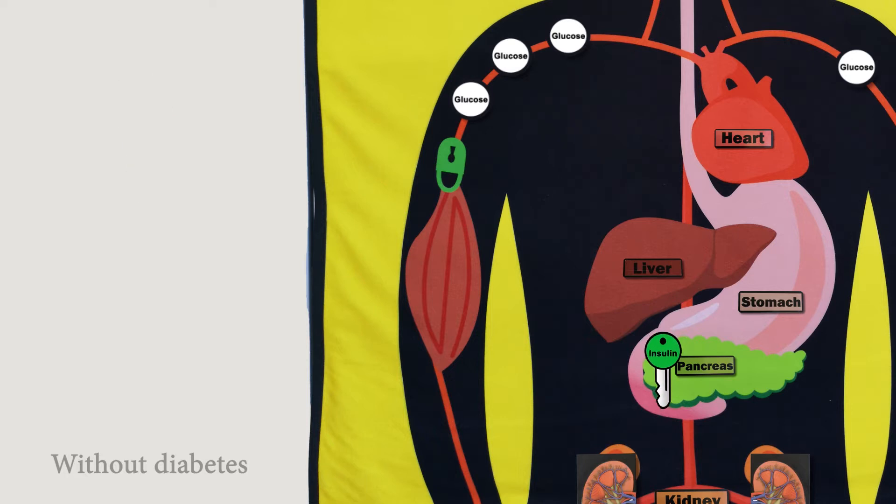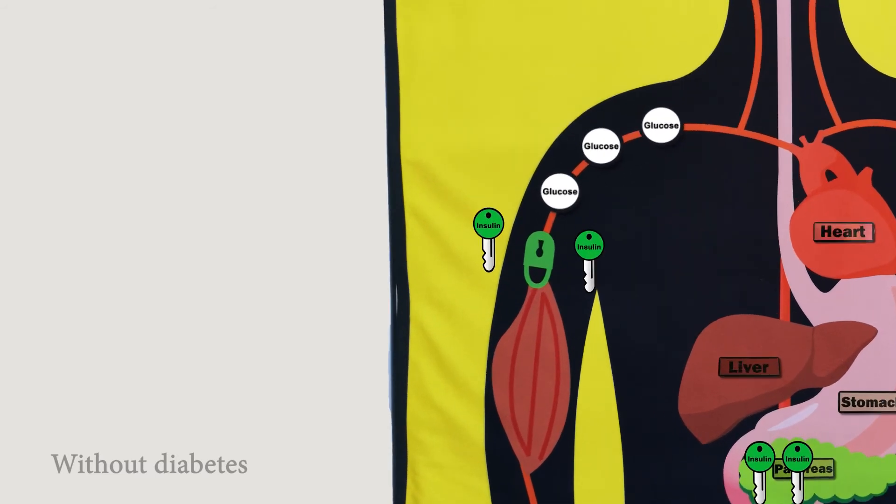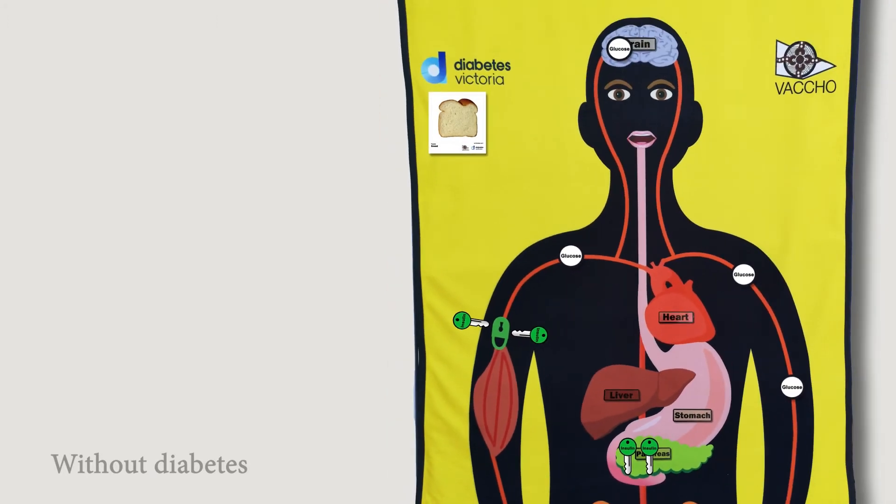The pancreas produces some insulin 24 hours a day. After eating carbohydrates the blood glucose level rises. The pancreas senses this and releases more insulin into the bloodstream. Use the insulin keys to show how insulin travels along the bloodstream to the muscle. Insulin acts like a key undoing the lock on the muscle to help glucose enter the muscle for energy. This lowers the blood glucose level.